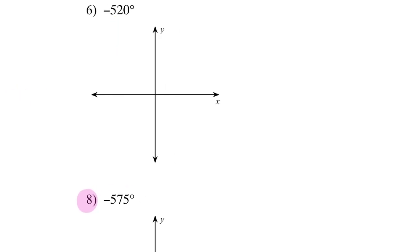Negative 520 degrees is a little bit different because it's more than 360. Initial side goes down — so going clockwise: 90, 180, 270, 360. Now I'm missing 160 more: 90 more gets me to 450, and I need 70 more from there. So the terminal side is close to the negative y-axis. My arrow goes there and that's my angle of negative 520 degrees.